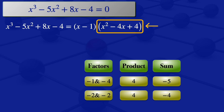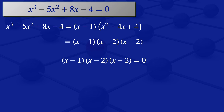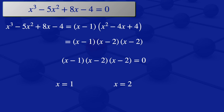So the quadratic factors as x minus 2 multiplied by x minus 2. Our full expression is x minus 1 multiplied by x minus 2 multiplied by x minus 2 equals 0. For this product to equal 0, each factor must equal 0: x minus 1 equals 0, or x minus 2 equals 0, giving x equals 1 or x equals 2. Since x minus 2 appears twice, x equals 2 is a repeated root. So the solutions are x equals 1 and x equals 2 (repeated root).